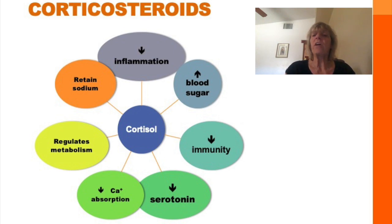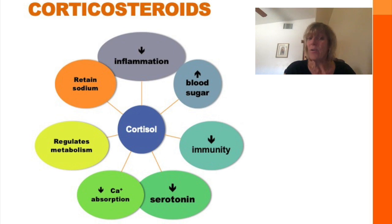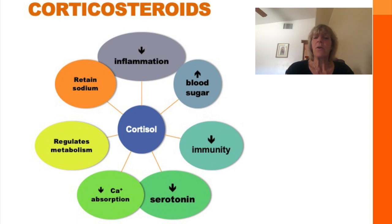Under stress, cortisol increases blood sugar as a survival method so we can escape the threat. Putting energy into digesting lunch, preparing for sex, and optimizing the immune system — these are not the priority under stress. So cortisol suppresses immunity and decreases libido. Serotonin, one of our feel-good neurotransmitters, is decreased by high cortisol levels. Cortisol also affects bone density — when cortisol is increased, calcium absorption is decreased. Cortisol regulates metabolism of carbohydrates, proteins, and fats. And lastly, cortisol increases sodium retention and potassium excretion.